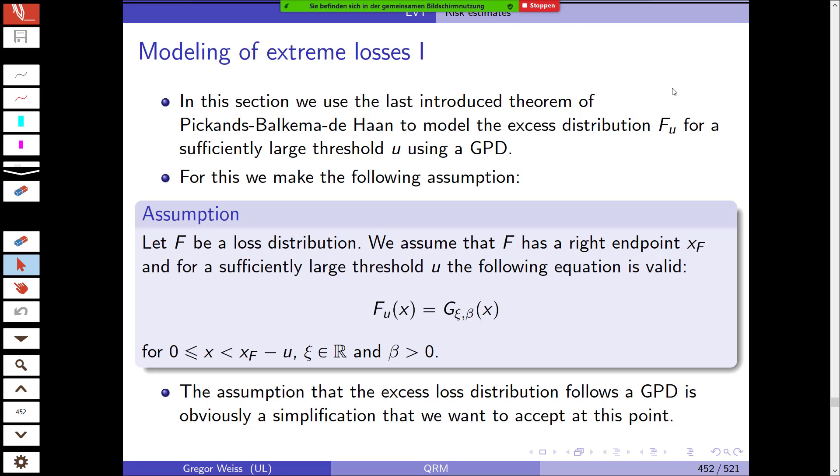And perhaps more importantly, we saw the theorem of Pickands, Balkema and de Haan for the distribution of extreme values beyond a certain threshold. This was the excess distribution F_u for a sufficiently large threshold U. If U goes to the extremal point of the distribution, if you're looking at the right tail, Pickands, Balkema and de Haan theory tells us that the excess distribution actually follows a generalized Pareto distribution.